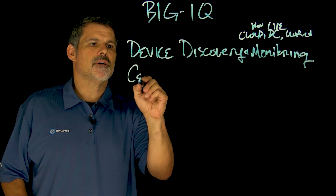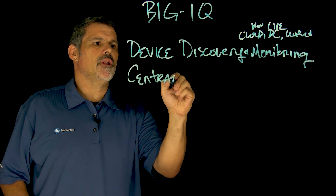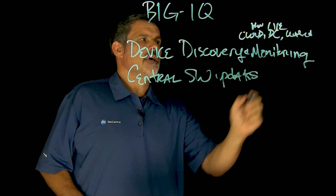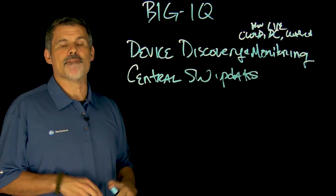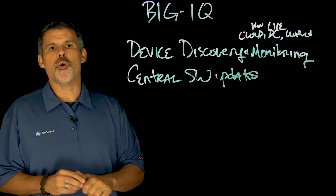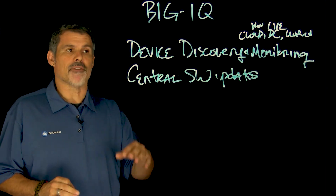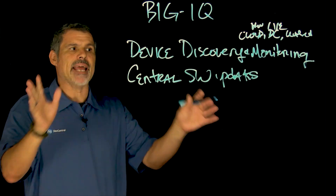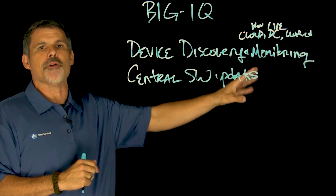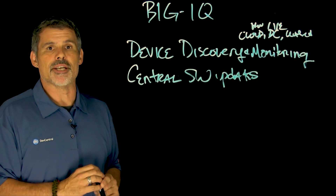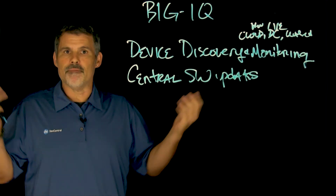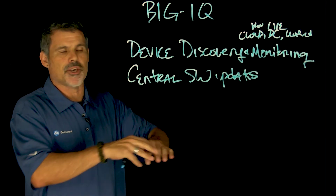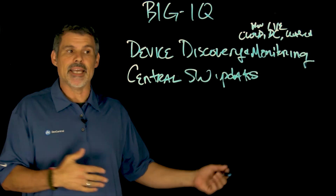You can do central software updates. After version 10.2, you're able to load Big IP software versions onto the Big IQ and then manage those updates — being able to update all of your Big IPs from a centralized location. Say you're upgrading from version 11 to version 13: you load version 13 onto Big IQ and then distribute it out.